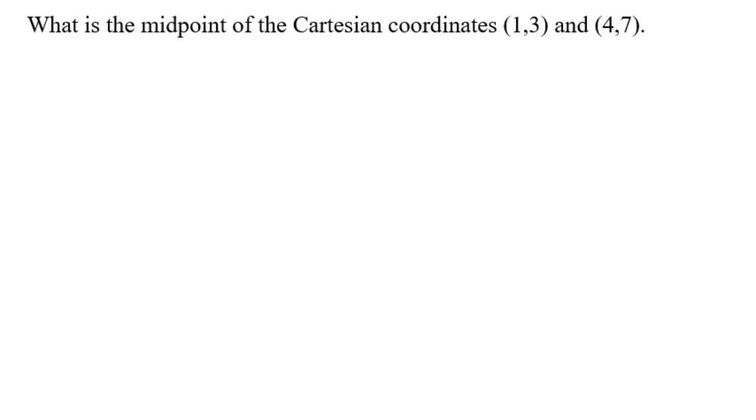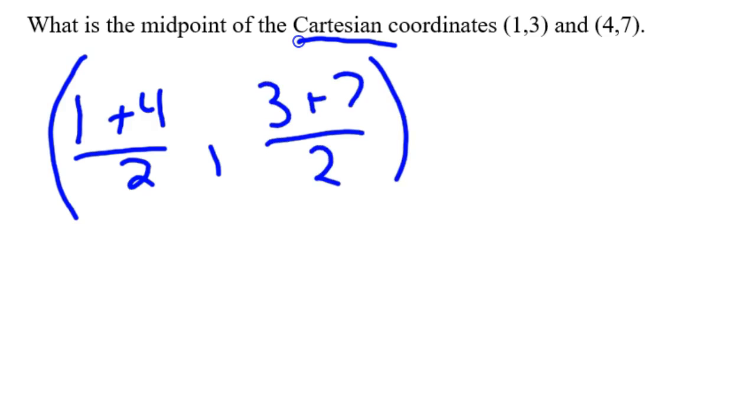All right, there's a formula for this. Cartesian, the word Cartesian, don't let that scare you. That just means x, y coordinate system, if you've heard that before or haven't heard that before. And what I like to do for midpoint is I like to find the average, and it's fast. You find the average of your x's and the average of your y's. So it's just an average. So one plus four divided by two, and three plus seven divided by two. So you can quickly do that mentally.